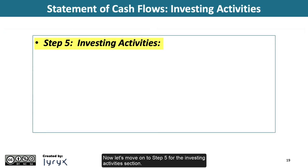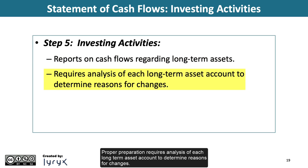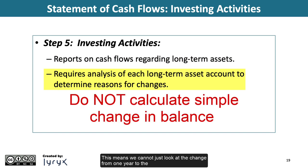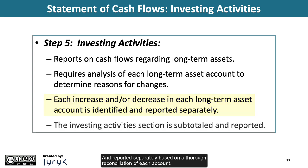Now let's move on to Step 5: the investing activities section. This section reports on cash flows regarding long-term assets. Proper preparation requires analysis of each long-term asset account to determine reasons for changes — we cannot just look at the change from one year to the next because we could be missing important information. Each increase or decrease in each long-term asset account is identified and reported separately based on a thorough reconciliation of each account.